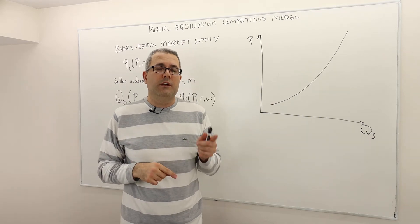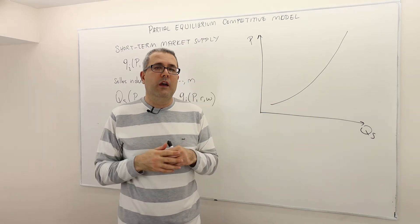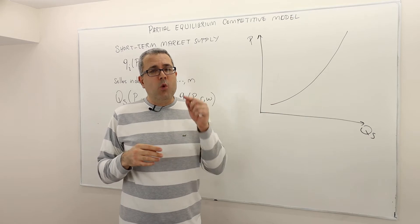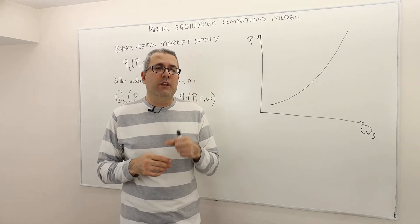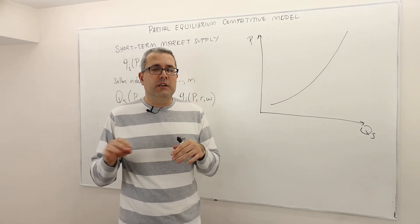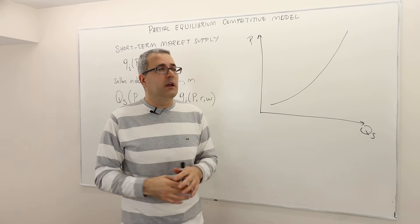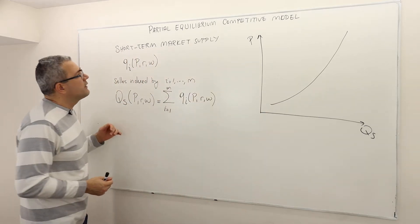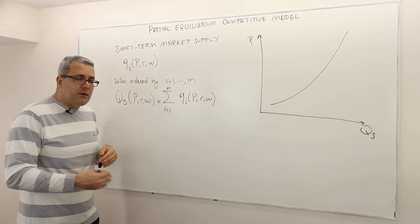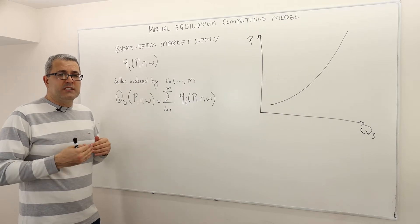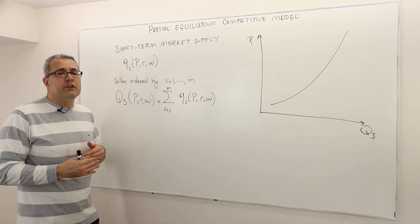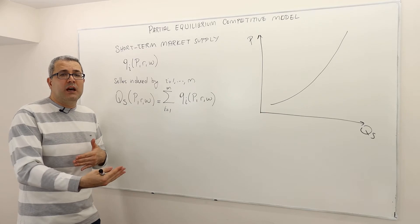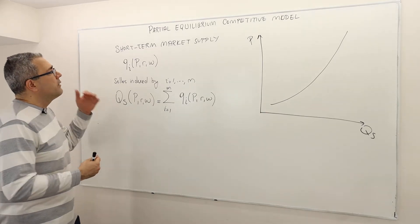Before jumping to equilibrium price, there's one final piece that we need to clear, which is the market supply. Very similar to market demand, the market supply basically comes from or is derived from the individual firms' supply functions.